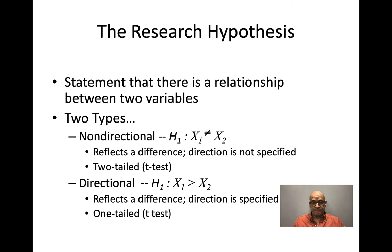There are two types of research hypotheses. Non-directional hypotheses say that something would be different — that this group is going to be different than that group — without specifying which group will be bigger or smaller. This is the basic research hypothesis that we test most often. It's a two-tailed test, in which we allocate the probability of being wrong to both tails.